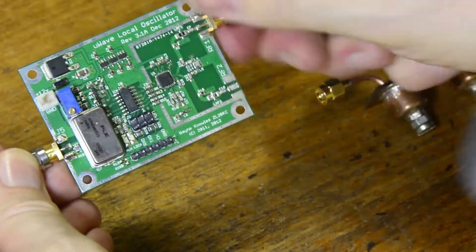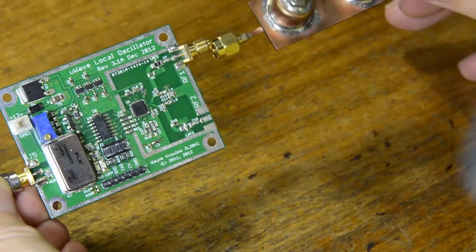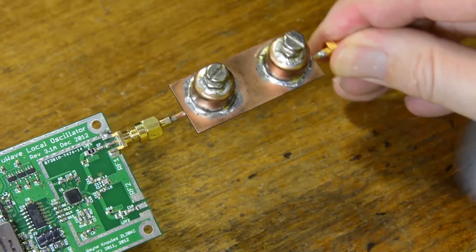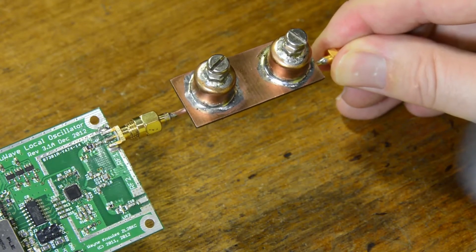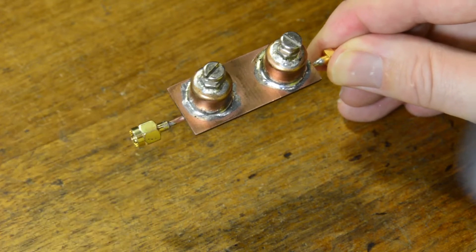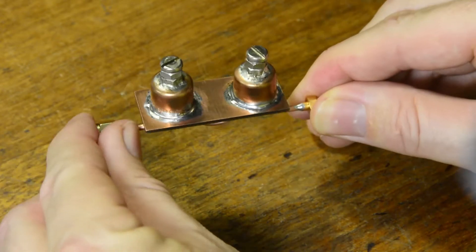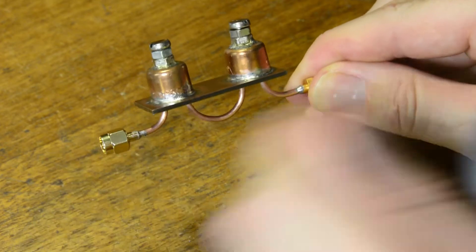So what we do is put the bandpass filter in line with the PLL and it would filter out the fundamental at 3.4 gigs just leaving us a nice clean output at 10 gigs and filtering off everything else.